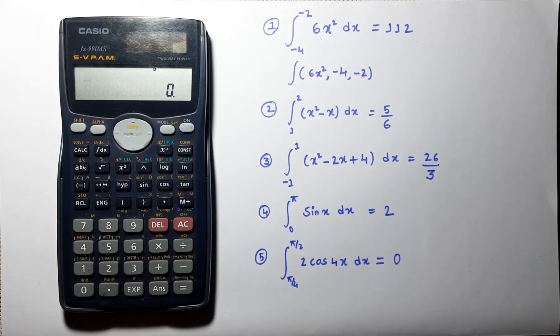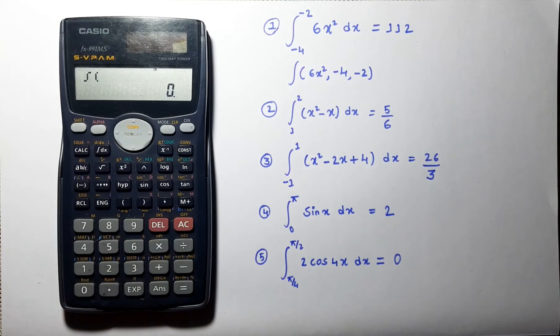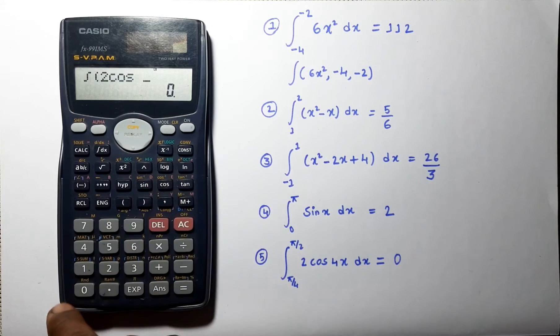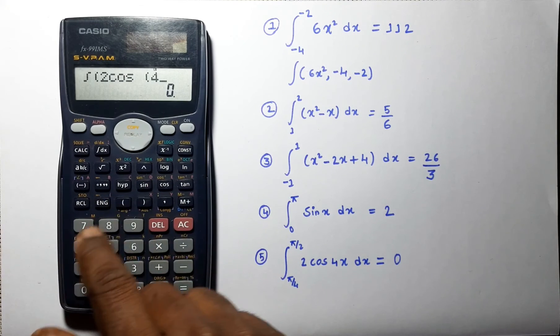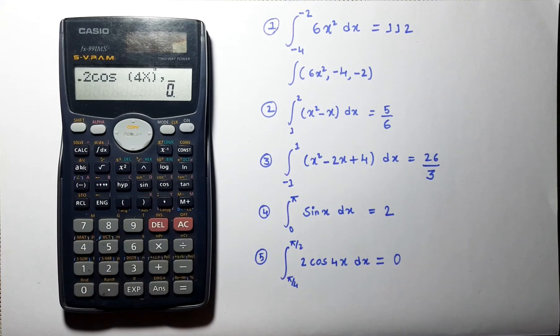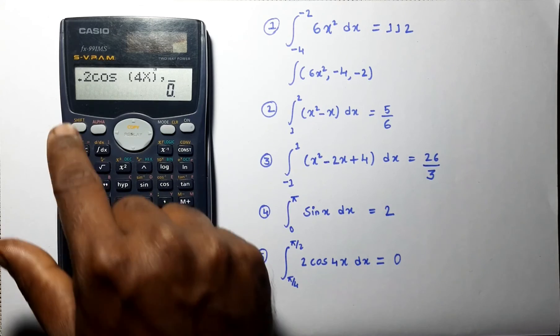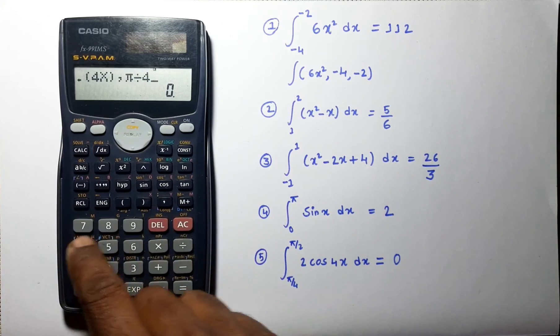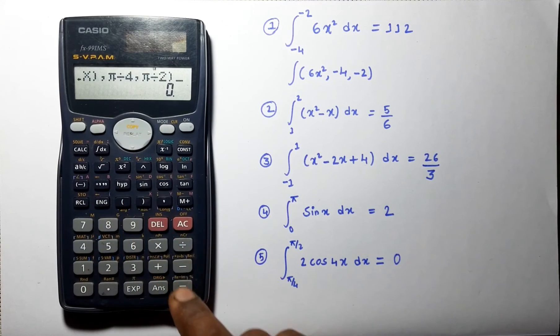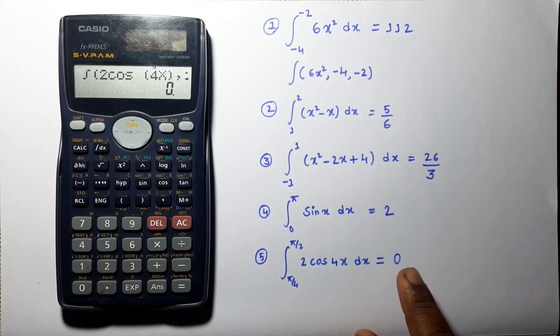Let us solve next problem. Integral of 2 cos 4x and the limit varies from pi by 4 to pi by 2 and we can check this answer which is 0.